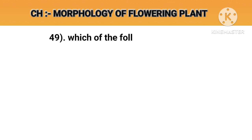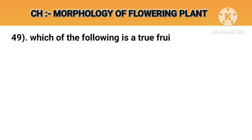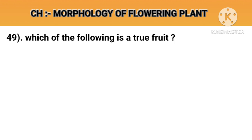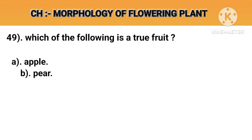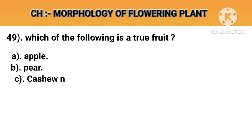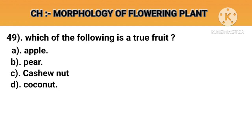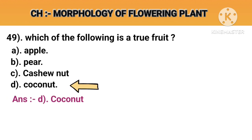Question number 49. Which one of the following is a true fruit? Option A: Apple. Option B: Pear. Option C: Cashew nut. Option D: Coconut. Answer D: Coconut.